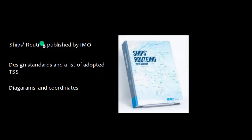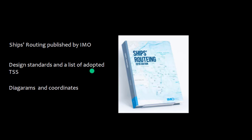The IMO publishes a document called 'Ship's Routing,' which contains design standards and a list of adopted traffic separation schemes. This publication includes diagrams and coordinates of TSS for various areas, which mariners can refer to during passage planning and use as guidance accordingly.